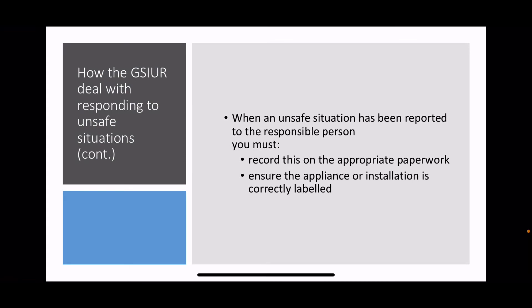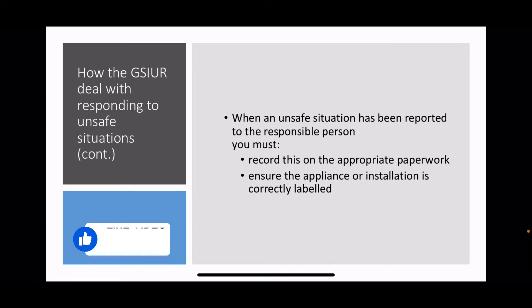When an unsafe situation has been reported to the responsible person, you must record it on the appropriate paperwork and ensure that the appliance or installation is correctly labelled. Remember, you've only got to label it if you haven't fixed the problem. All of this is really around a problem that you haven't fixed and you've had to walk away from the job.